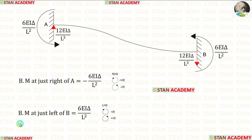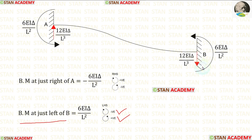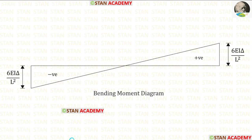The bending moment at just left of B can be found using the left-hand side rule: clockwise will be negative and anticlockwise will be positive. MB is acting in the anticlockwise direction. So, it will be positive. Using that concept, we can make the bending moment diagram.